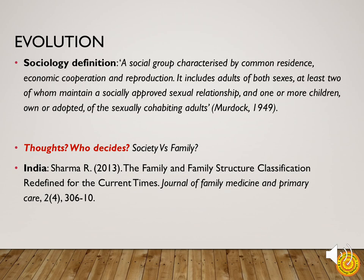Another sociology definition describes a family as a social group characterized by common residence, economic cooperation and reproduction, including adults of both sexes, at least two of whom maintain a socially approved sexual relationship, and one or more children — own or adopted — of the sexually cohabiting adults. This definition is very old, from Murdoch in 1949, and is extremely narrow and not inclusive of many current family structures.